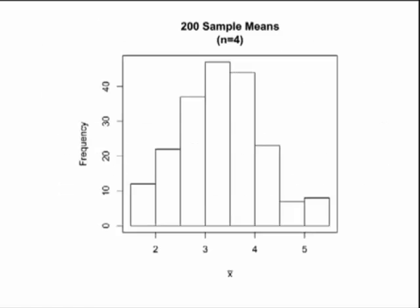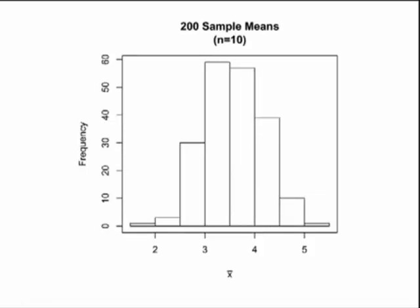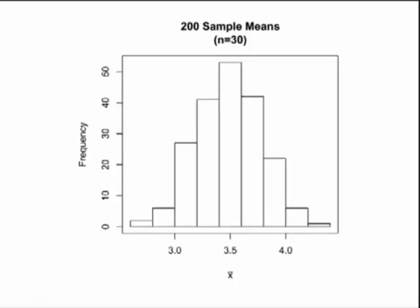When the sample size is 4, the distribution is roughly bell-shaped, and notice the mean is close to the population mean of 3.5. For a sample size of 10, notice the standard deviation decreased, and the mean of the sampling distribution is still 3.5, the same as the population mean. Looking at sample size 30, the standard deviation has decreased even more, and the mean of this distribution remains equal to the mean of the population.